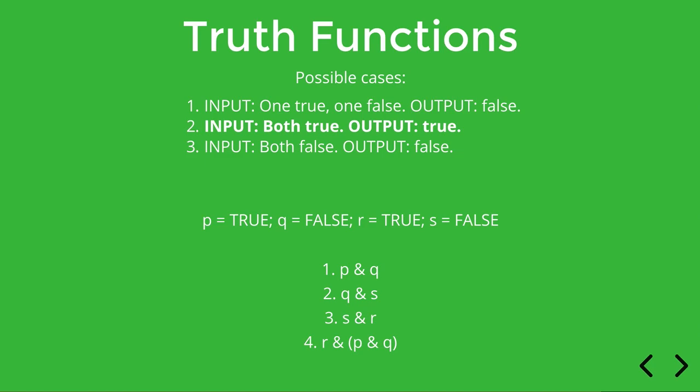All right, so in sentence one, p is true and q is false, so we have true and false, which is going to be false. In sentence two we have q, which is false, and s, which is false, so we have false and false, which is false. In sentence three we have false and true together as inputs, so the conjunction, the output, is false.